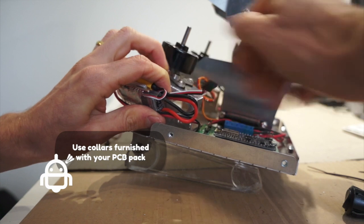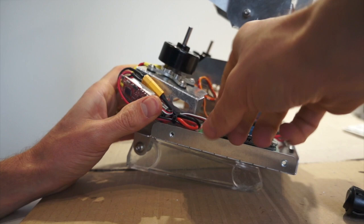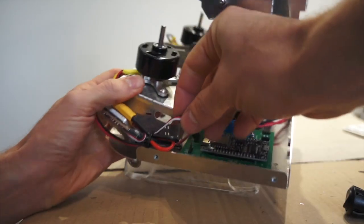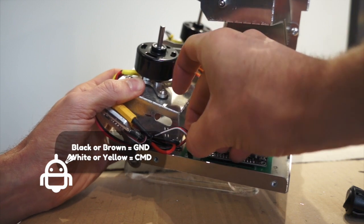Stowing the wire allows to prevent the wire touching the wheels that will turn. Then you have to plug the pin header following the color code.